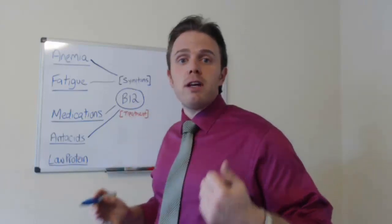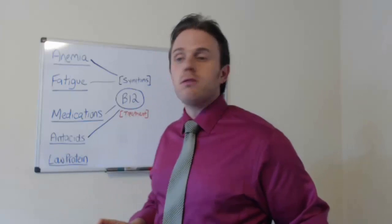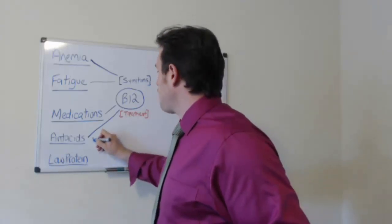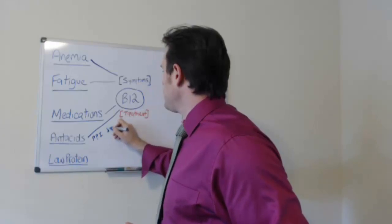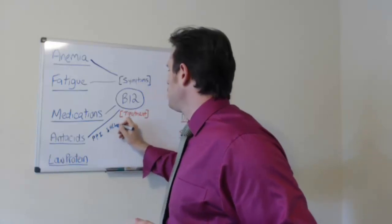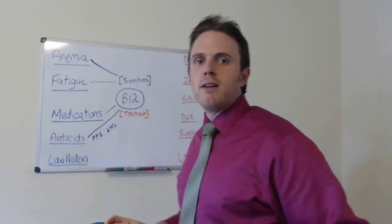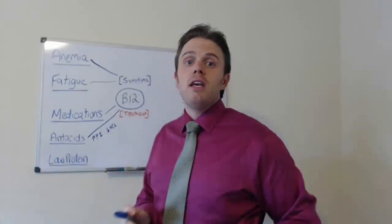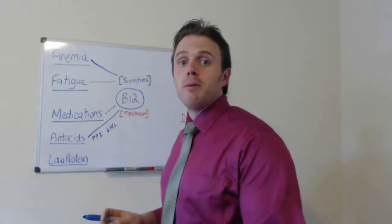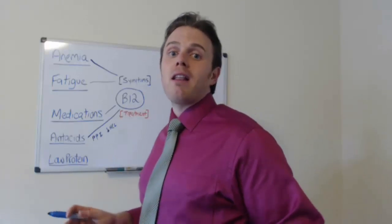So again, we need good parietal cell function. So if we're shutting down our parietal cells with a proton pump inhibitor, that's decreasing HCl. If we're affecting those parietal cells, it may affect the binding of intrinsic factor on B12 and also it's going to decrease our ability to digest and break down a lot of these products.